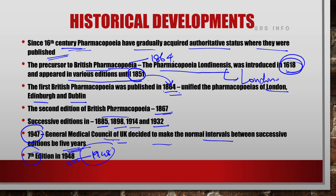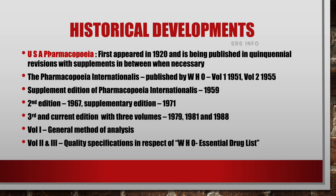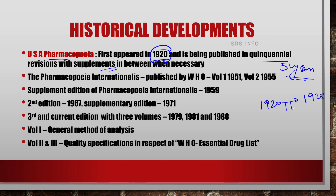This practice started in 1948 with the seventh edition. These historical developments are important from an exam perspective, so try to remember as much as you can. The next one is the USA Pharmacopoeia — the Pharmacopoeia of the United States of America. The first edition of the US Pharmacopoeia appeared in 1920 and was published at quinquennial, meaning five-year, intervals. However, there was also a practice of publishing supplementary editions whenever necessary between the successive five-year editions.